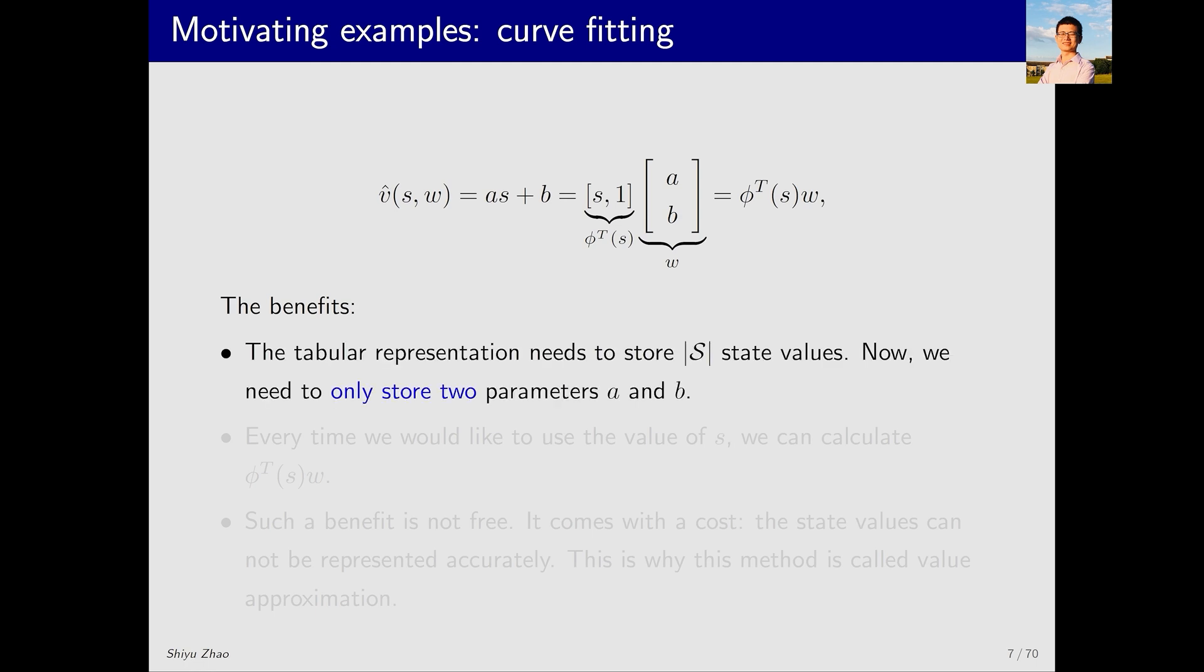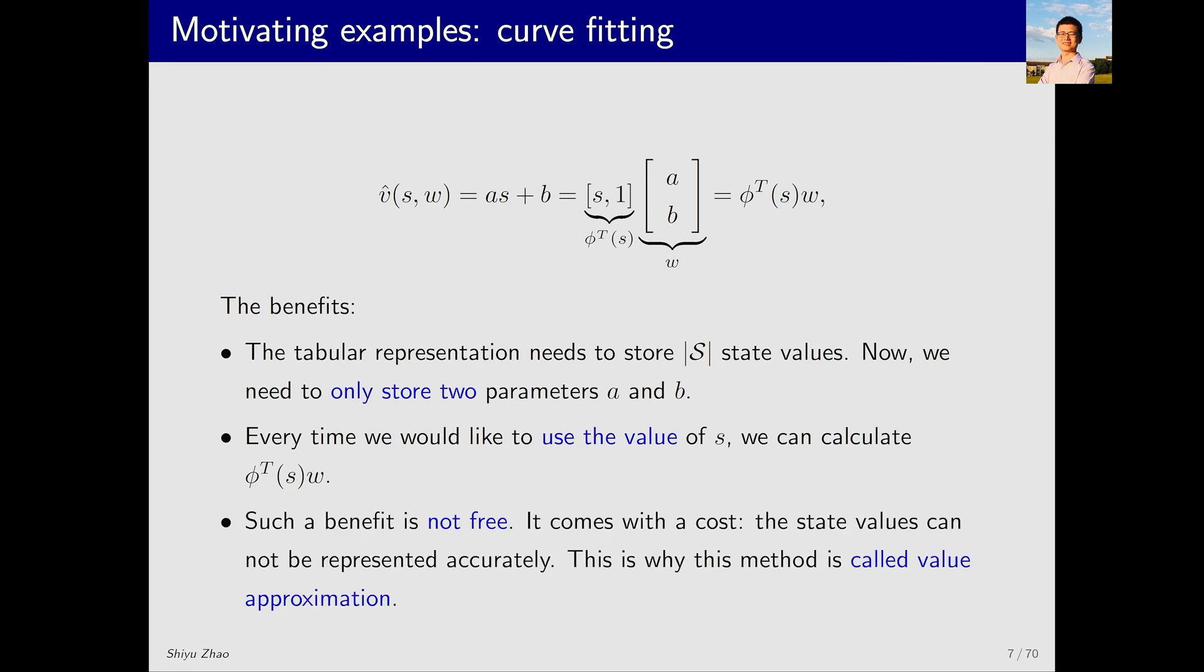What is the advantage of fitting with a straight line? If we use a table, we need to store a large number of state values, but now we only need to store two values, which correspond to the parameter vector w. Suppose that I want to get vπ(s), then I only need to get v̂(s,w). Specifically, the first step is to compute φ(s), which is called the feature vector. The second step is to multiply φ by w to compute v̂(s,w). So I only need to store w, greatly saving a lot of memory. However, this advantage is not free. It comes at a cost. What is the cost? It's that this approximation is not very precise. For example, these discrete points do not strictly form a straight line. If you insist on fitting them with a straight line, then at many points, the estimated v̂ and vπ(s) can differ significantly. This is also why this method is called value function approximation. It's an approximation.